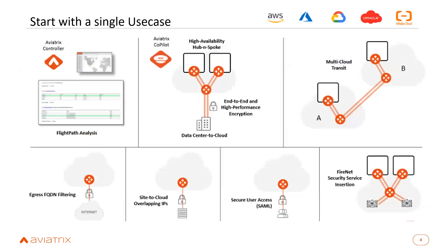Some of the use cases that can be leveraged from Aviatrix include: egress FQDN filtering, overlapping IP CIDR, secure user access, FireNet, multi-cloud transit for multi-cloud repeatability, and HPE — high performance encryption.